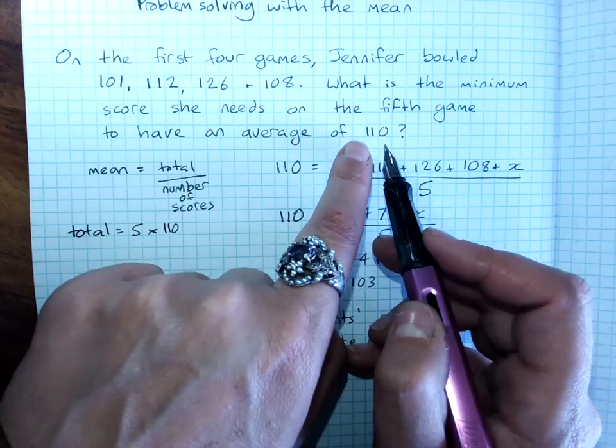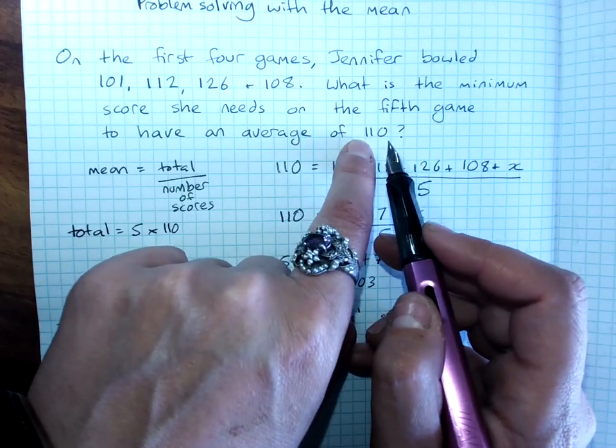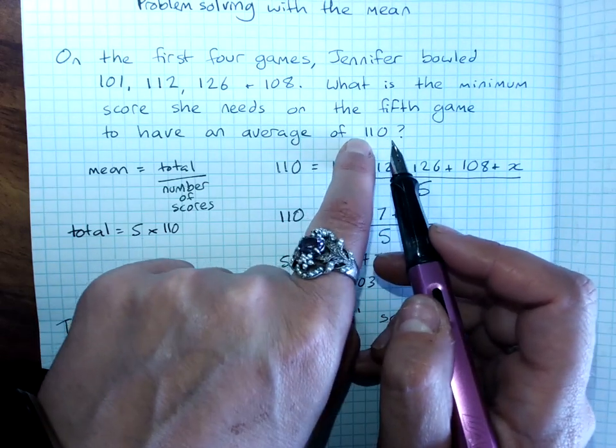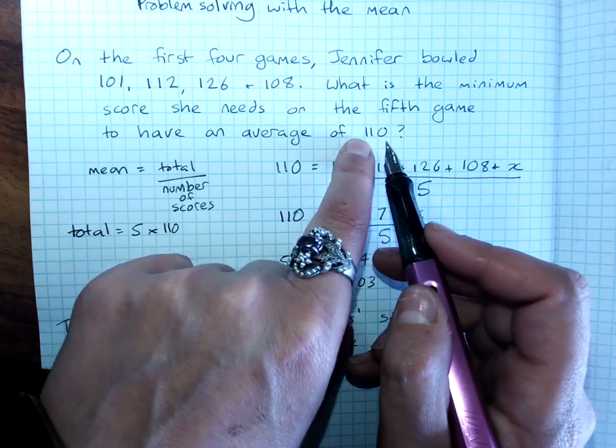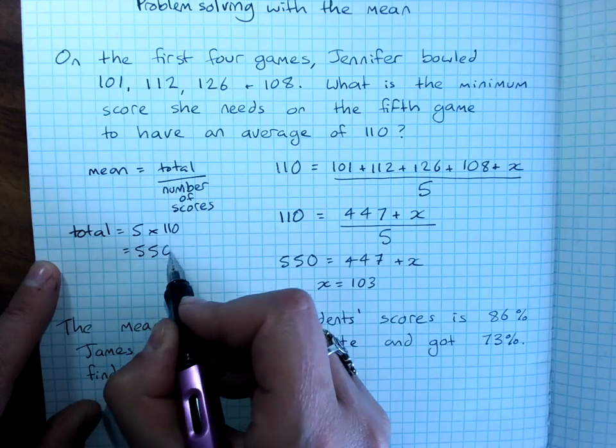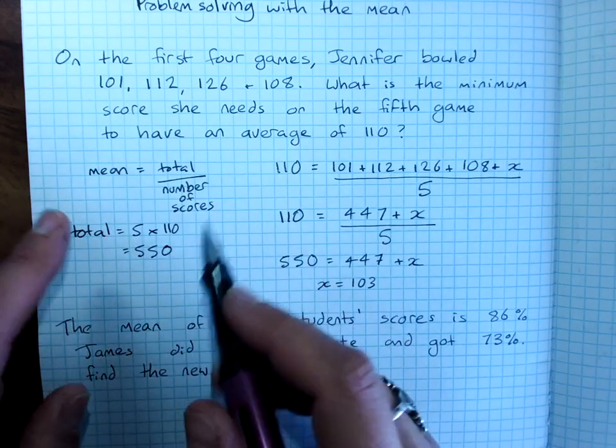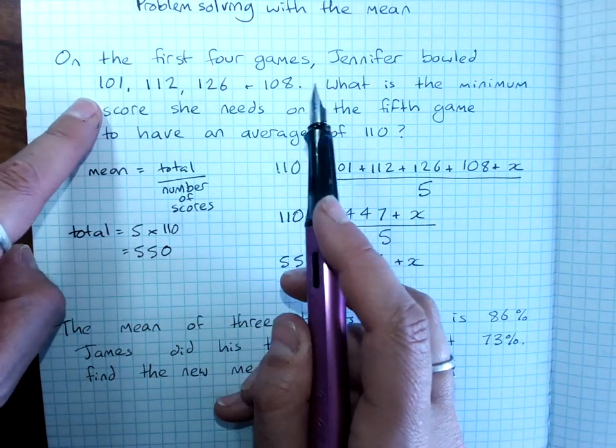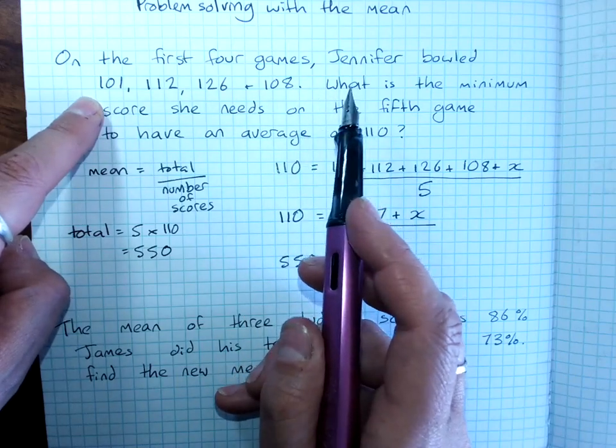Because an average of 110 says that, well, that's as if every game was 110 and there were 5 games, so the total would be that, be 550. And then, you'd want the next game after this to add up to 550.